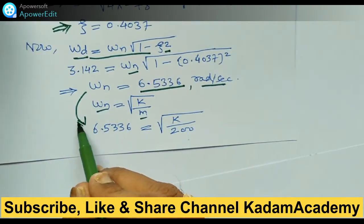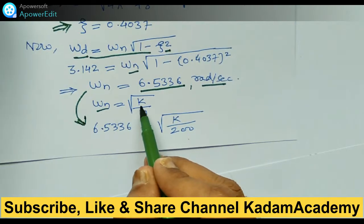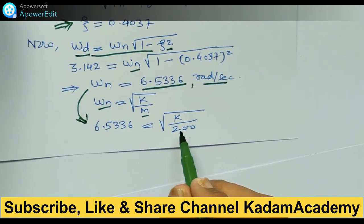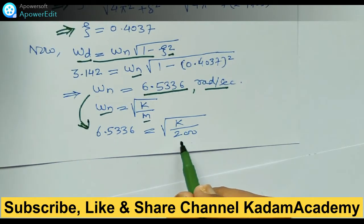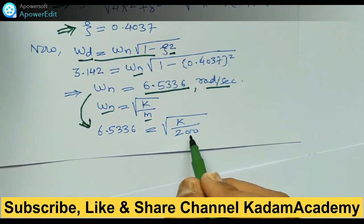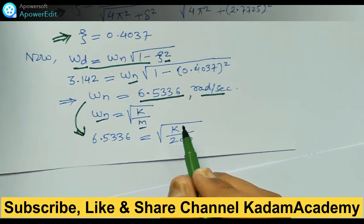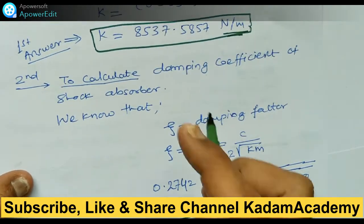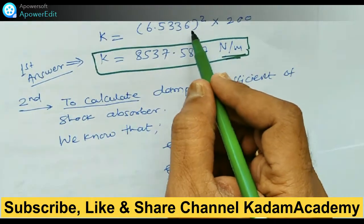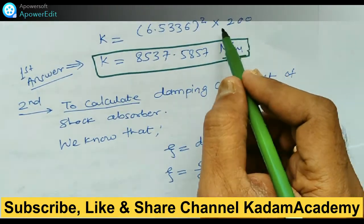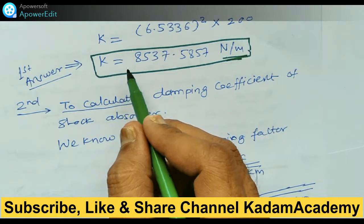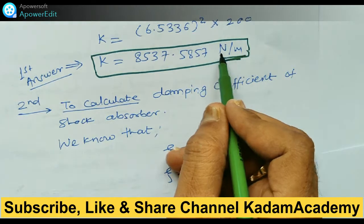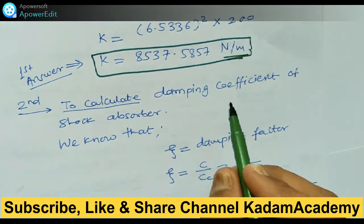Now for omega_n, we use the formula omega_n = sqrt(k/m). Since m = 200 kg, squaring omega_n and multiplying by m, we get k = 8537.5857 N/m. This is our first answer.